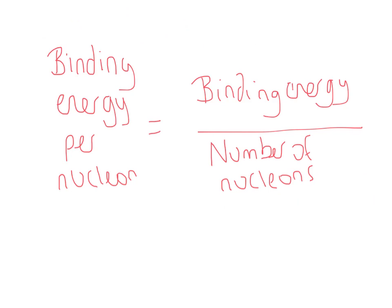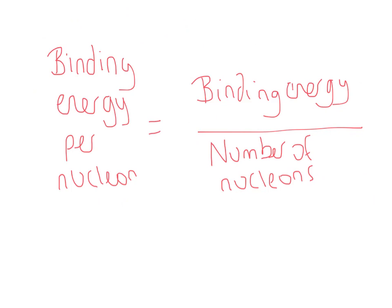So binding energy per nucleon is what you do is you take the binding energy which you can calculate using the equation we looked at on the previous slide, and you divide it by the total number of nucleons in the resulting atom. And you work out this binding energy per nucleon. And what we do is we plot a graph of this binding energy per nucleon against the number of nucleons, and that tells us something really useful.